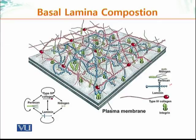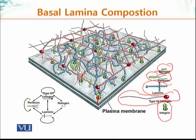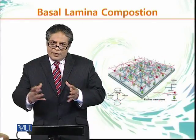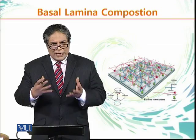The structure of basal lamina shows all its components: blue crosses are laminins, the small white molecule is nidogen, the green molecule with three tails is perlecan, and type 4 collagen is also present. The forceps-like structures protruding from the membrane are integrin molecules binding laminin or type 4 collagen. Type 4 collagen binds laminin directly, and this interaction is reinforced by nidogen and perlecan, which bind both.